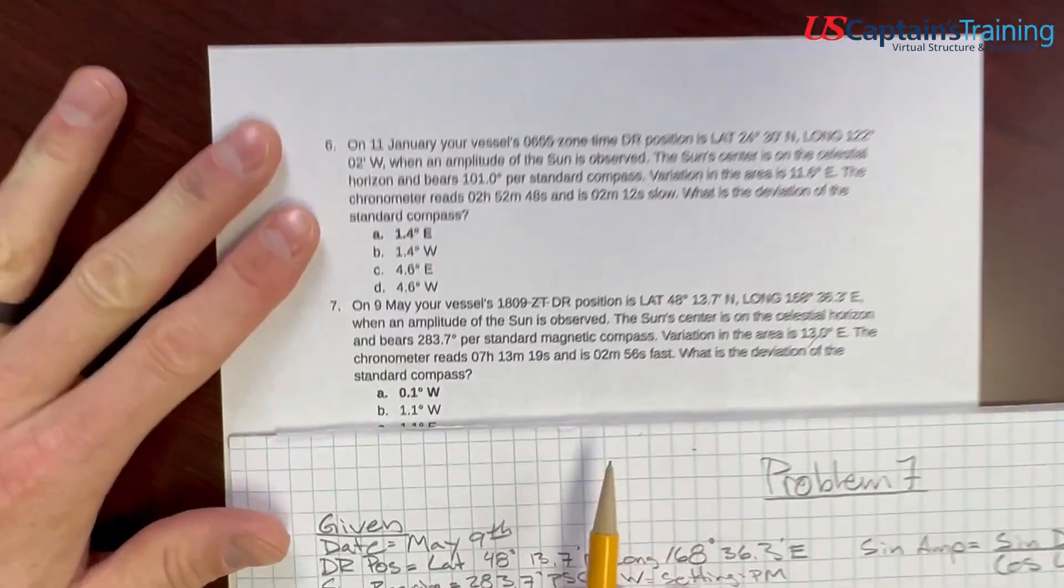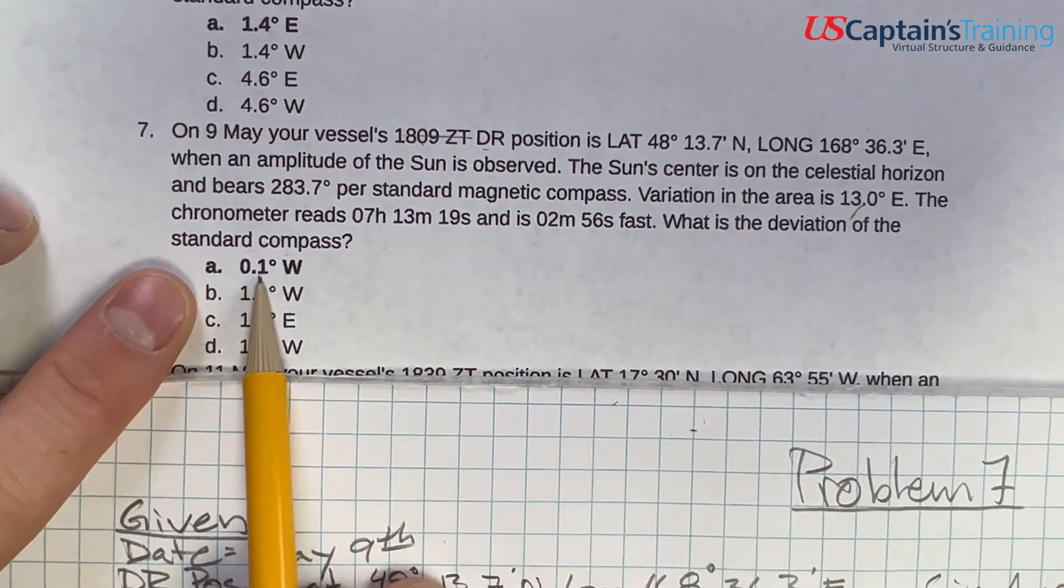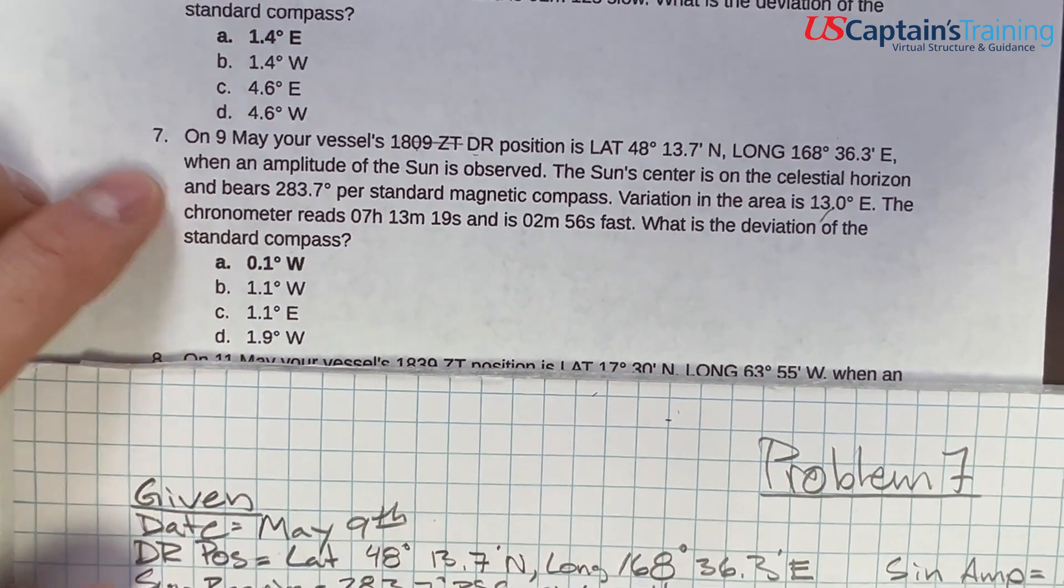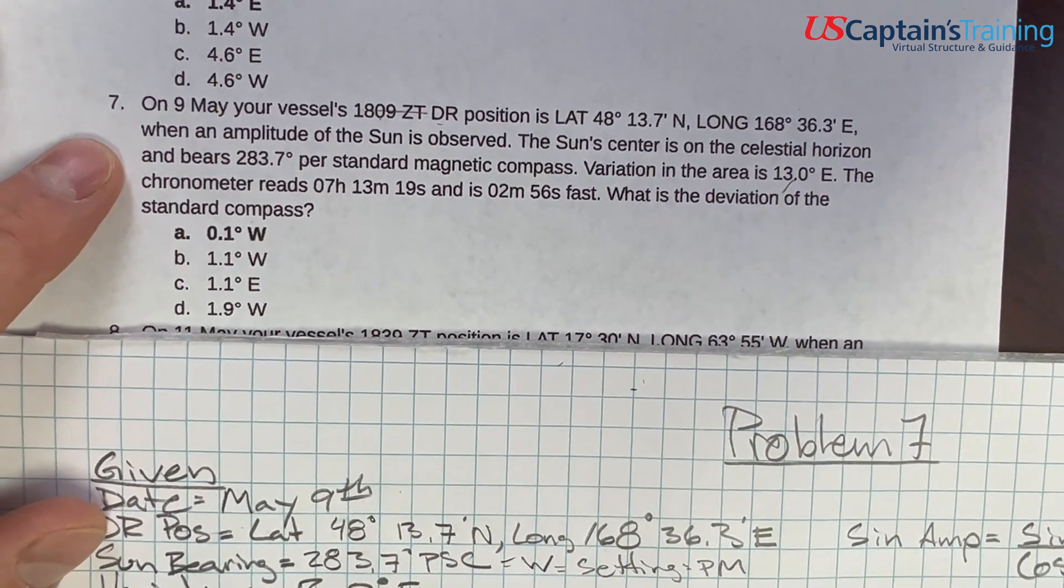Let's check. There we are. 0.1 degrees west deviation is the answer to practice problem 7.